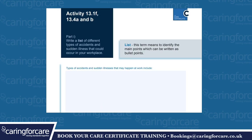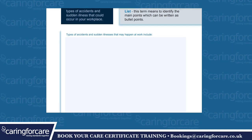Activity 13.1f, 13.4a and b. To list means to identify the main points which can be written as bullet points. Write a list of different types of accidents and sudden illness which could occur in your workplace. Types of accidents and sudden illnesses that may happen at work include...